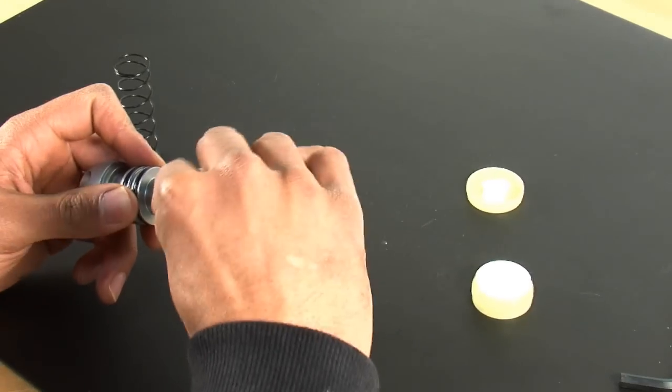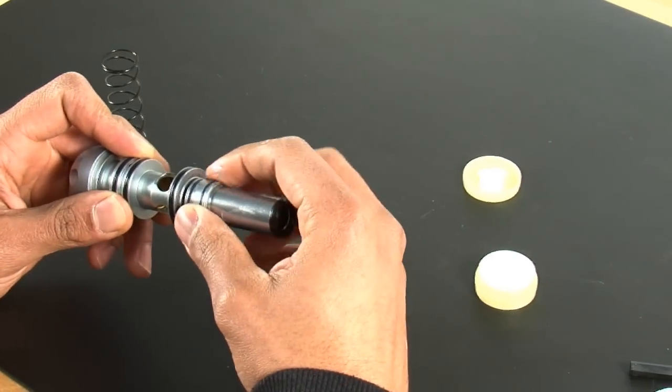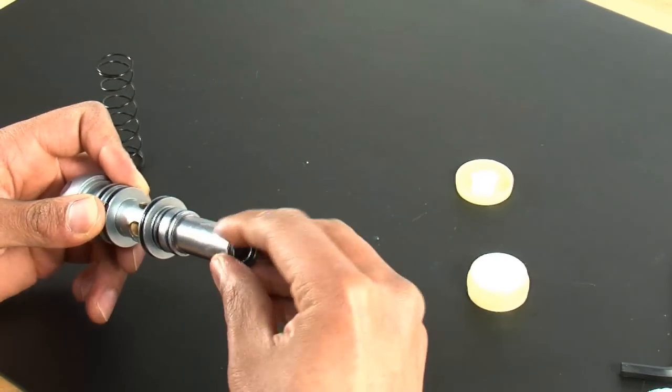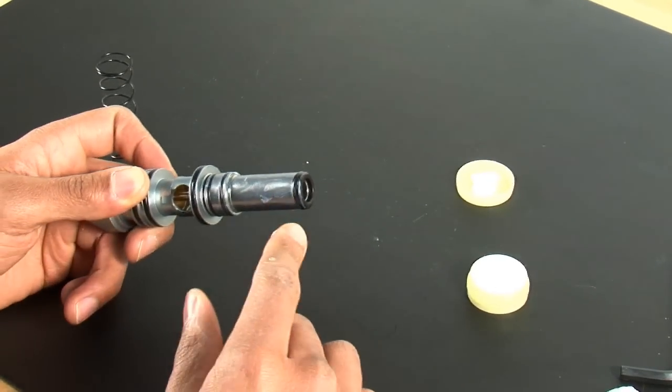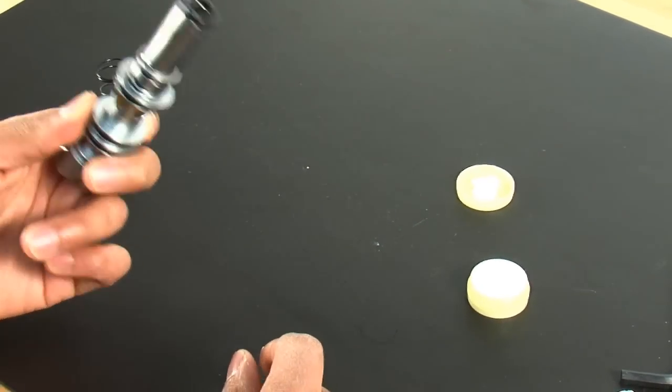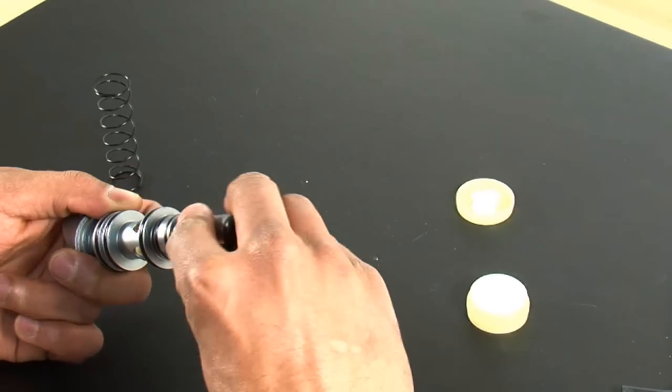Then you can take the lube, put it on the bolt o-rings here and a little bit on the outside of the bolt and the bolt tip. You don't want to do too much here because that will start touching your paintballs and maybe throw off your accuracy a little bit. So just a little bit of lube on the outside of the bolt here.